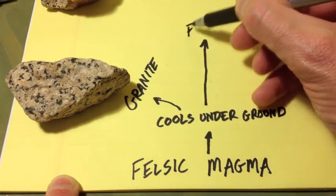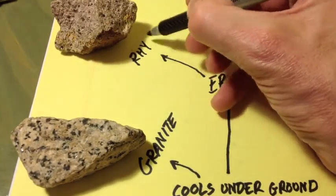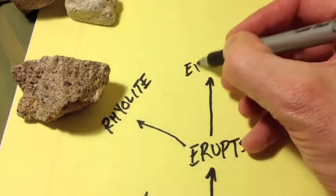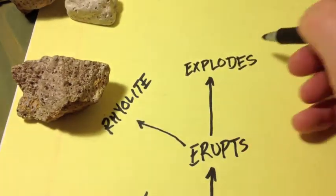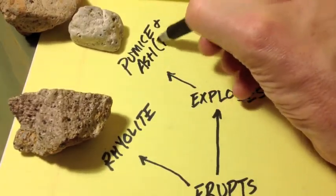When it erupts, what do we get? Rhyolite. We get rhyolite, which is fine-grained. When it explodes into the atmosphere, we get pumice and tuff, just like the intermediate.